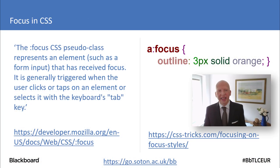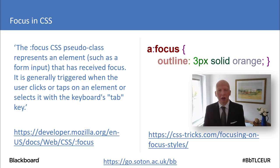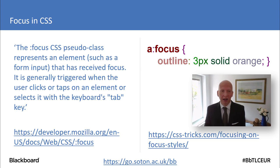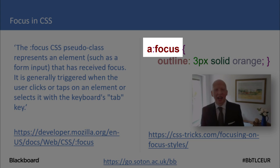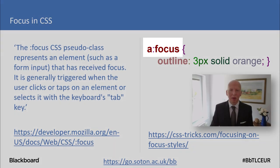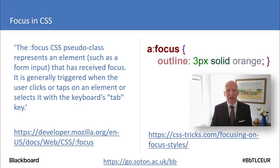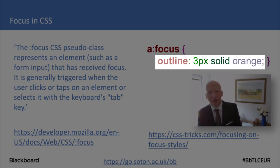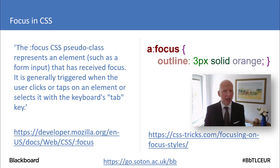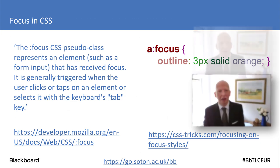In terms of CSS, focus is — apparently — a pseudo class. In the example at the top right, A is the link, and we're saying when you're focusing on it we want the outline around that element to be three pixels, a solid line, and orange colour. That's just an example of how we do focus. In Blackboard, the focus styles in the default theme are very accessible.